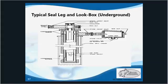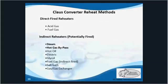Seal legs prevent the process gas from blowing into the sulfur pit or atmosphere. To do this, the seal legs must be deep enough to ensure that the column head pressure of the liquid sulfur is greater than the maximum combustion air blower discharge pressure.